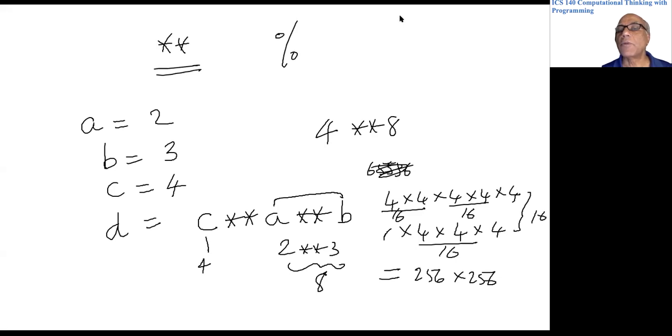So that is how exponentiation works, it is done from right to left. Finally let's talk about percent. As we saw in the slide, it gives you the remainder of the division roughly speaking if you are assuming all positive numbers.